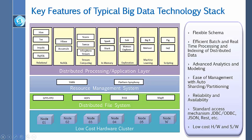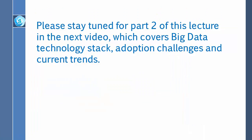Let me discuss some of the key features of the big data technology stack. Key features include flexible schema, efficient batch and real-time processing, and indexing of distributed data. It also supports advanced analytics and modeling, along with ease of management with auto-sharding and partitioning. This technology stack is also reliable and highly available, and provides standard access mechanisms to JDBC, ODBC, JSON, REST, and other important tools. In the next part of this lecture, I will discuss in detail all the layers of the technology stack. Please stay tuned for the next lecture.